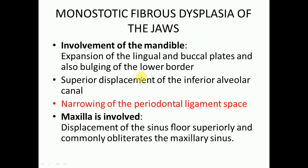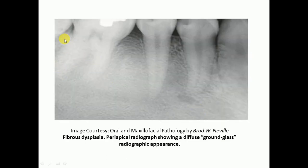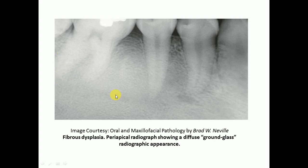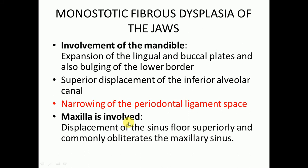If the mandible is involved, there will be expansion of the lingual and buccal plates, bulging of the lower border, and superior displacement of the inferior alveolar canal. Another characteristic feature is narrowing of the periodontal ligament space — the periodontal space around the roots is not clearly visible. Note that this finding may also be present in hyperparathyroidism.